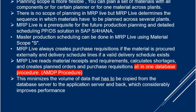In S/4 HANA, the planner's role and the procurement people's role are now considered differently. Earlier, you had planned orders and then had to convert to purchase requisitions separately. Now, MRP Live directly creates purchase requisitions if the material is procured externally — either a purchase requisition or a delivery schedule will be created for materials marked as externally procured.